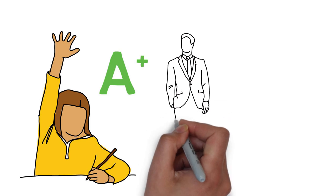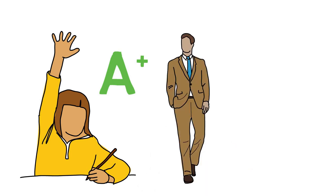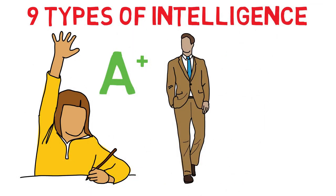How many different kinds of intelligence are there? My name is Robin Molast, I'm a doctor in psychology and in this video I will describe 9 types of intelligence.